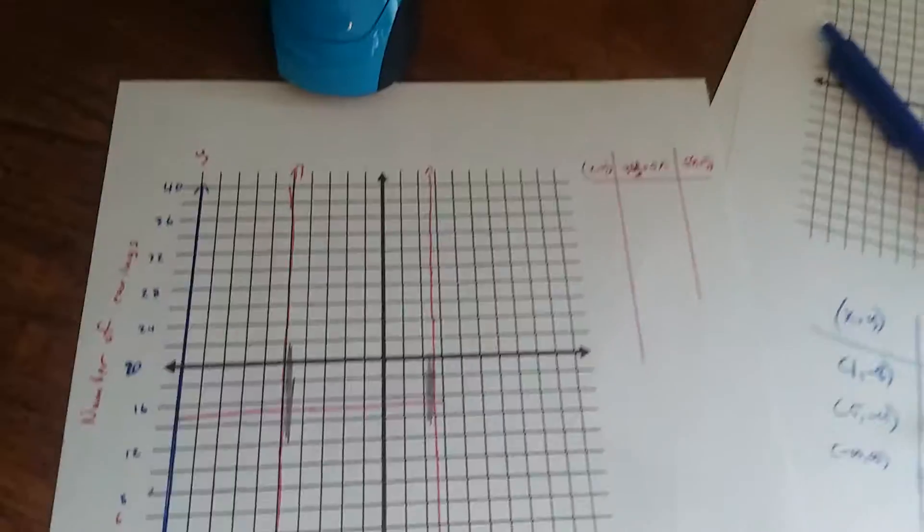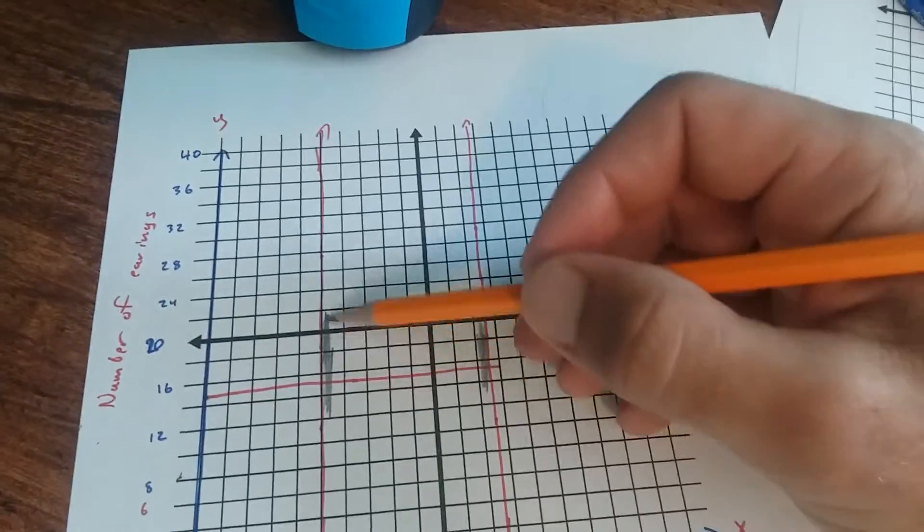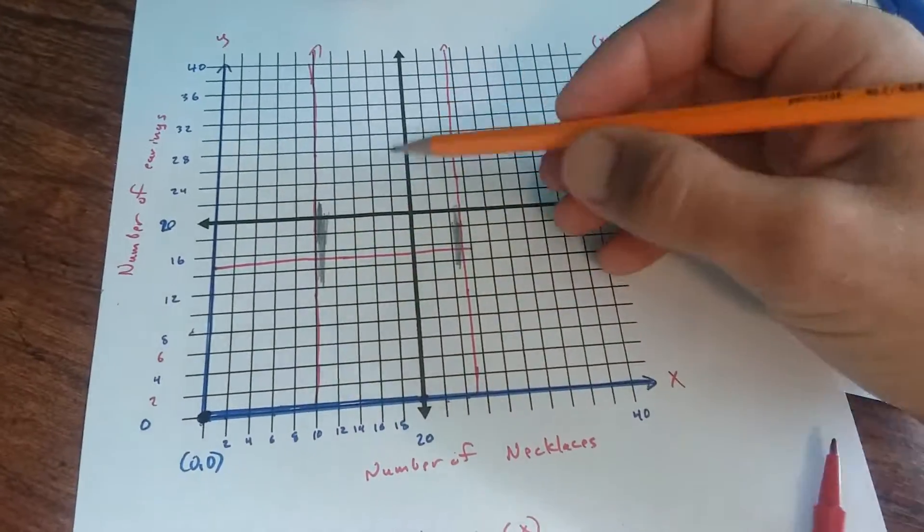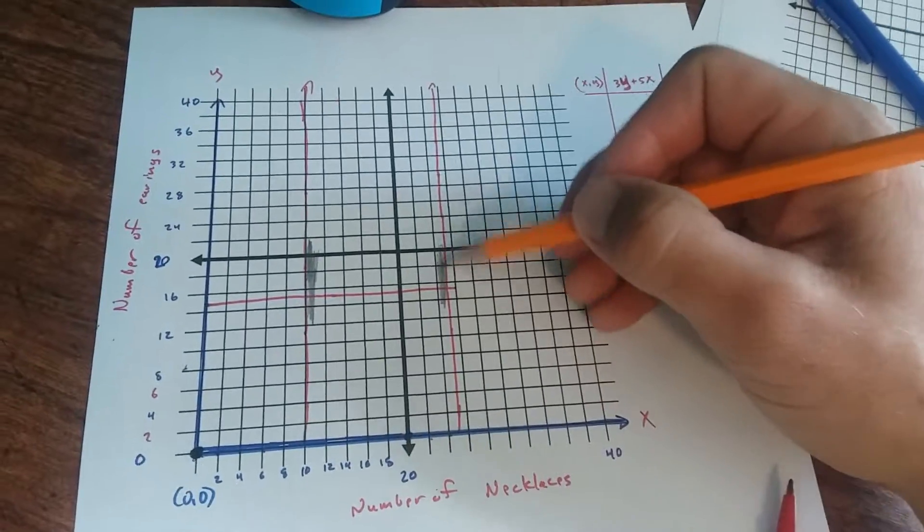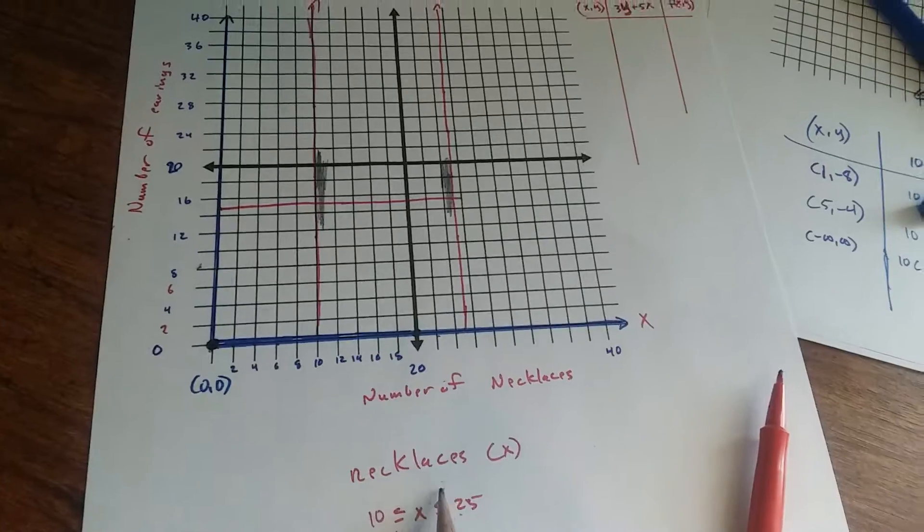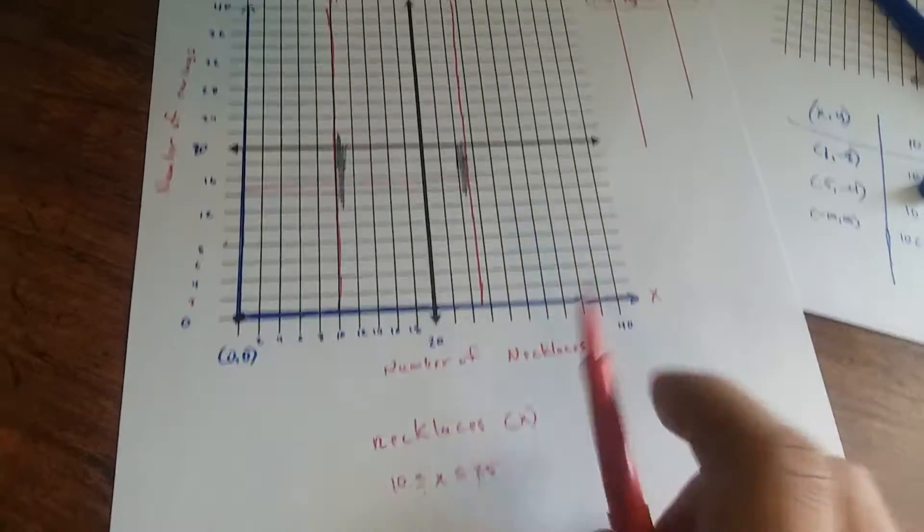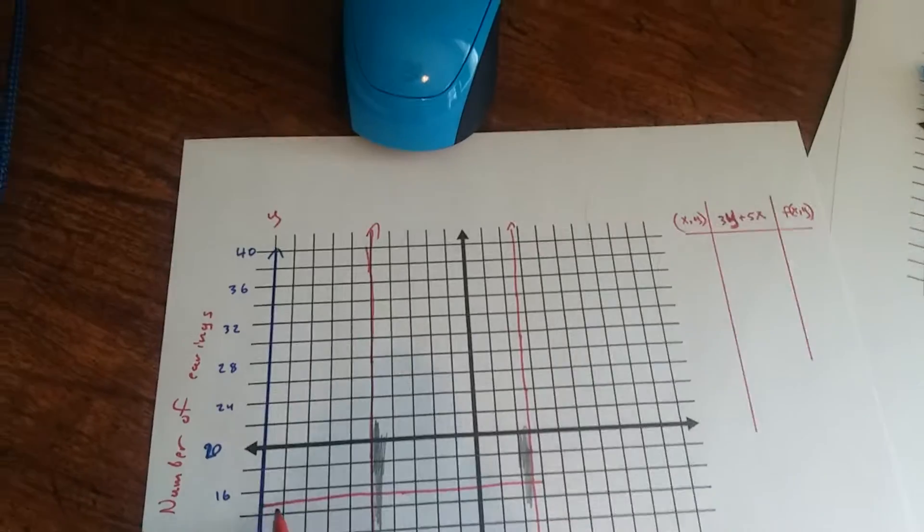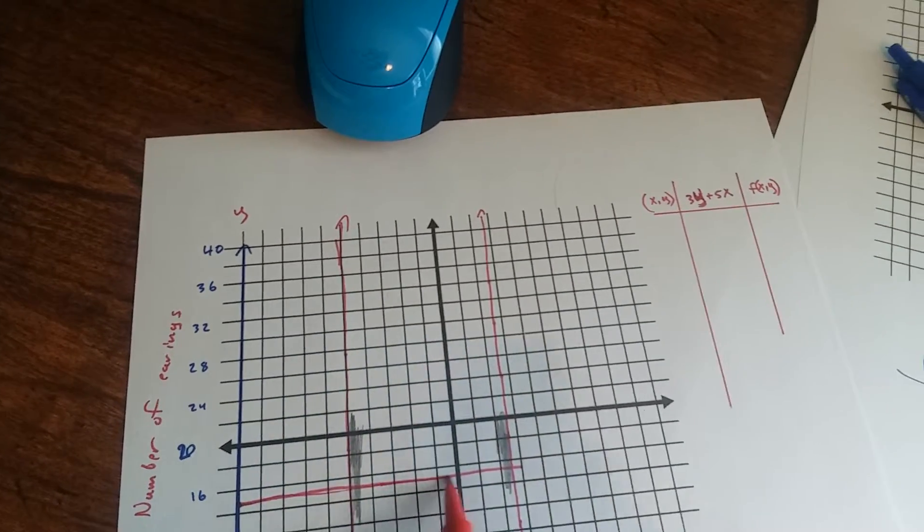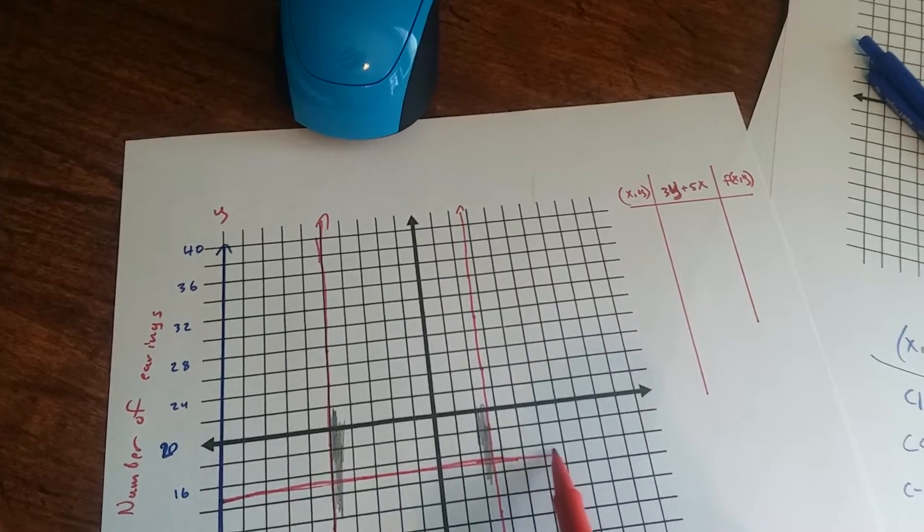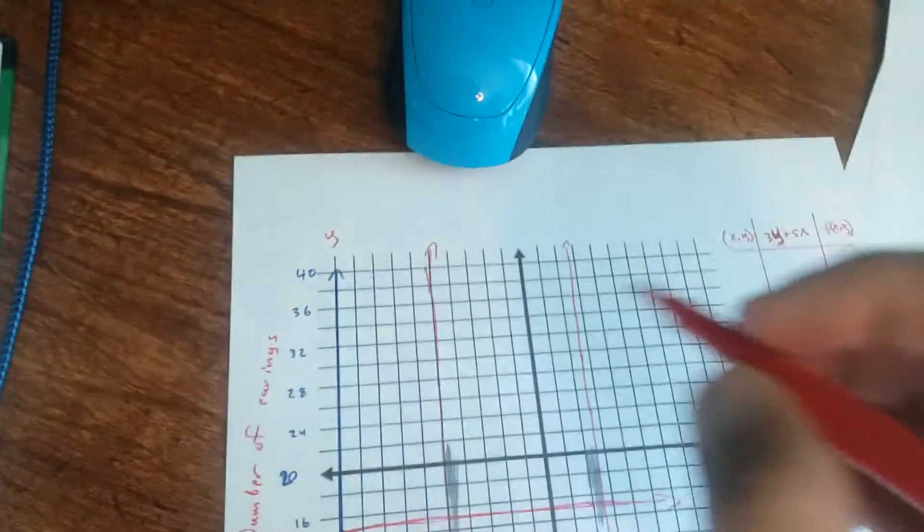Okay, so notice we're shading on the inside here between 10 and 25 here because necklaces has to be between 10 and 25. Now, between 15 and 40, okay, you're going to draw a horizontal line at Y equals 15. And then another one at 40.